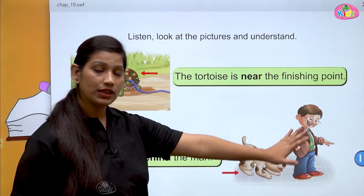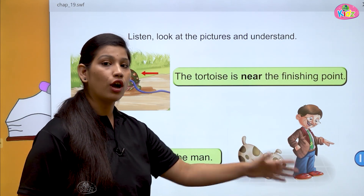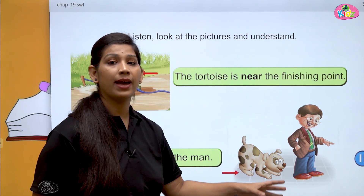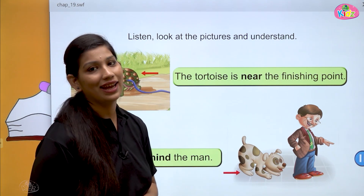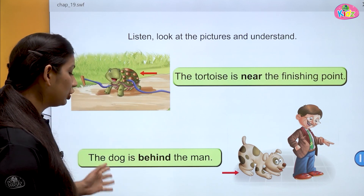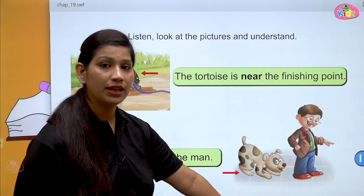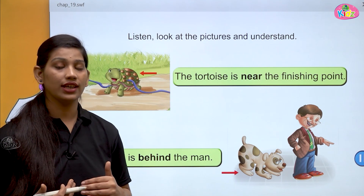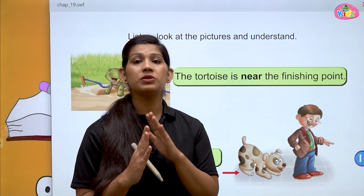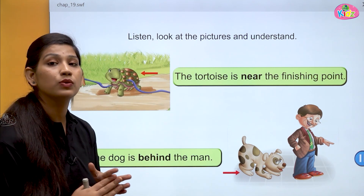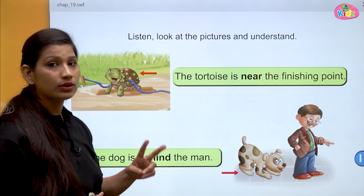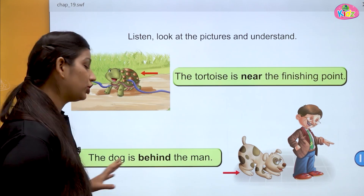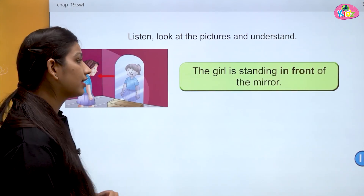Here you can see the dog and the man. Man aage hai, dog piche hai. Jo piche ki position hoti hai — koi bhi cheez jo hamare piche hoti hai — jaisi ki dog is man ke piche hai — toh hum kya bolte hain? Behind. The dog is behind the man. Jab koi bhi cheez piche hoti hai toh hum use karte hain: behind. Near matlab hota hai paas, behind matlab hota hai piche.